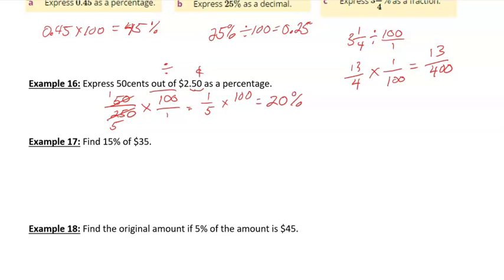15% of 35. So 15%, we could turn that into a decimal, and multiply that by 35. We could do this, 15 per cent. And we can do a bit of cross-cancelling, and find our answer to B.